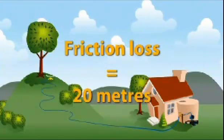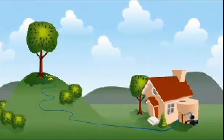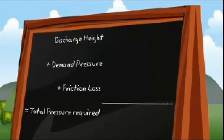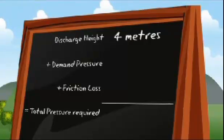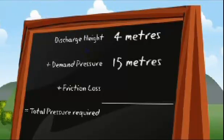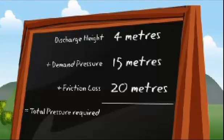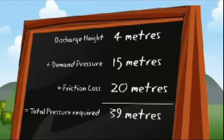The next step is to calculate the total head or pressure the pump will need to accommodate. We know that the discharge point is 4 metres above the pump and the demand pressure of the sprinkler is 15 metres or 150 kPa. We have just calculated that the friction loss will be 20 metres. Add these three amounts together and we have the total amount of head or pressure required, in this case 39 metres.